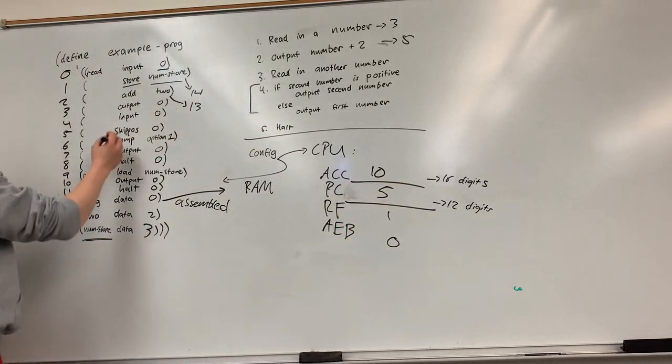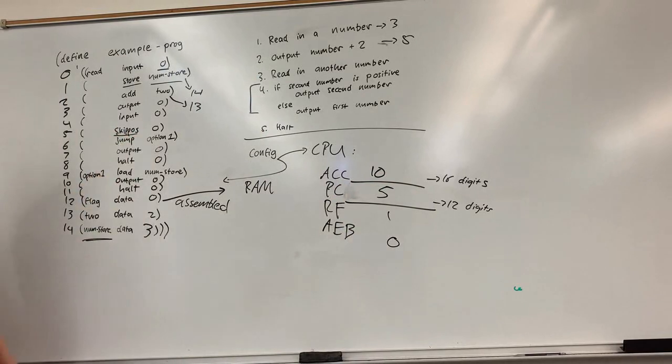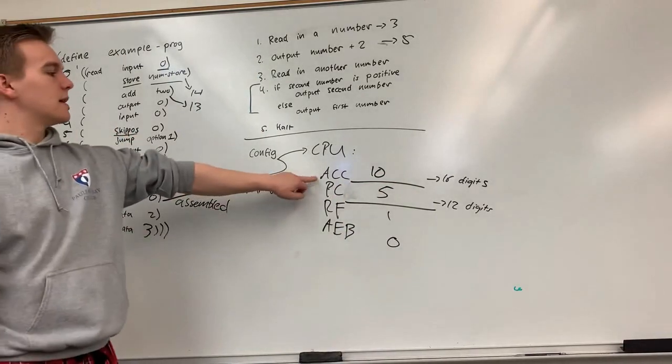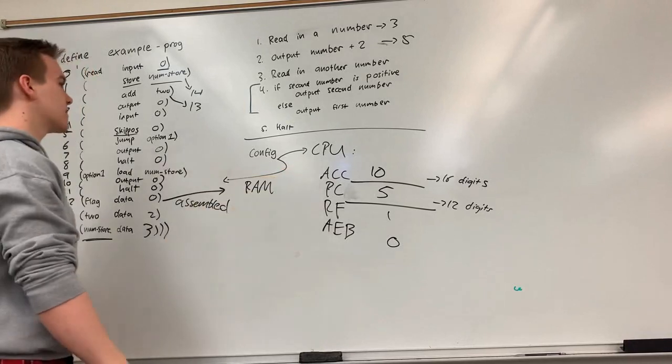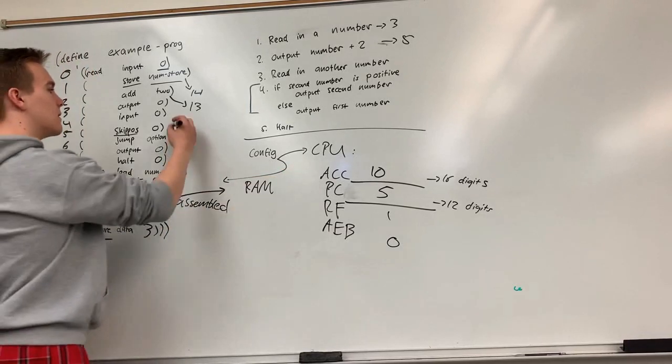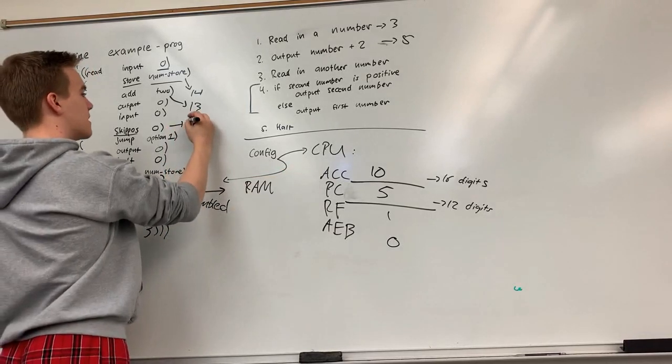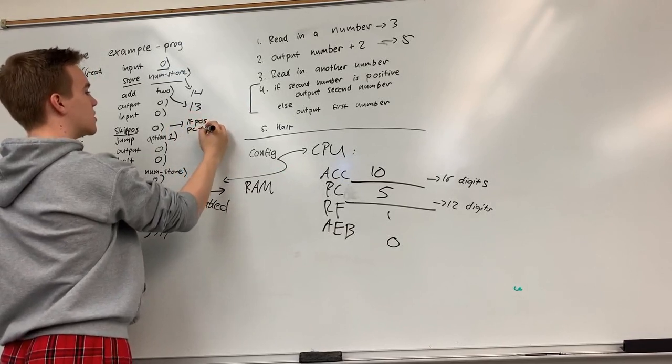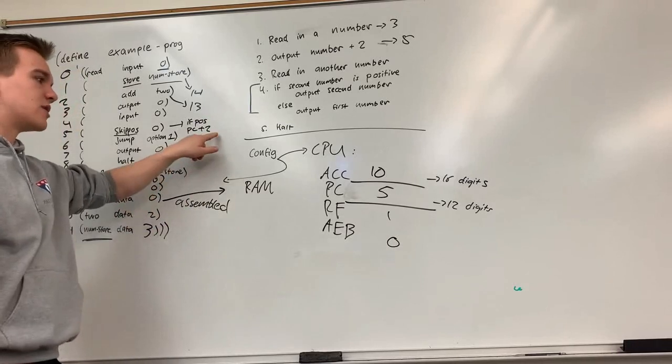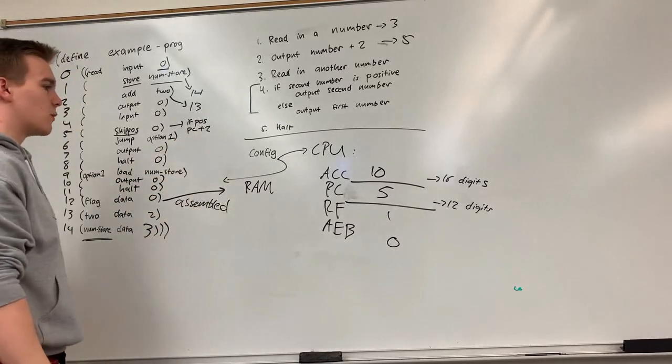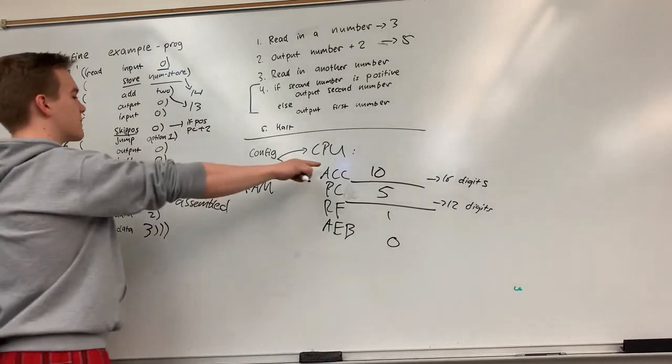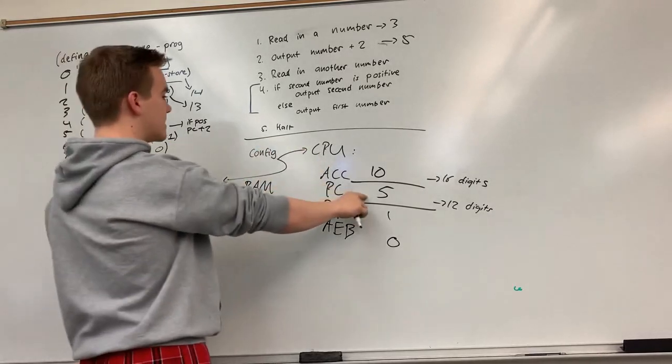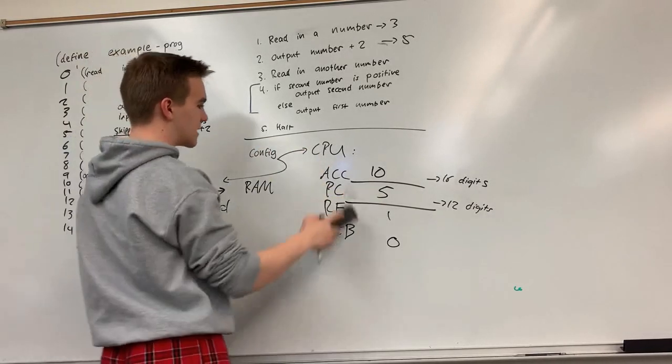Instruction five says skip skippos or skip positive. So it'll check in our accumulator. Is the value in our accumulator positive? And if so, this says basically if positive PC plus two. So increase the program counter by two instead of by one as we normally would. So ten is positive. Instead of the PC going to six the PC is going to go to seven.